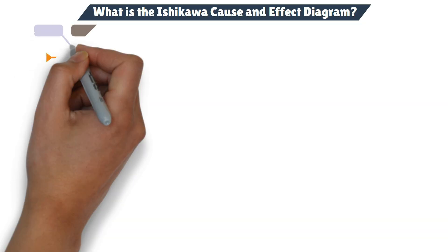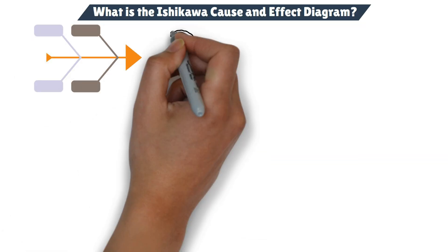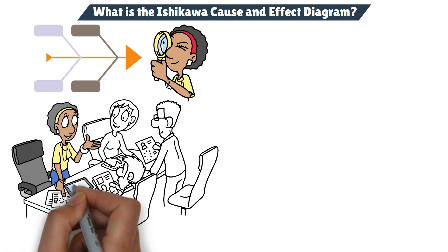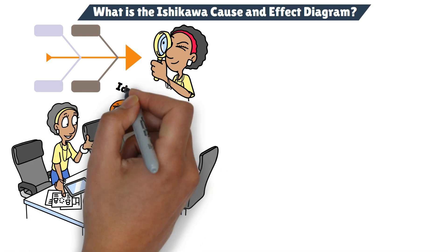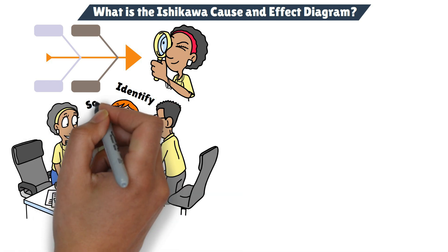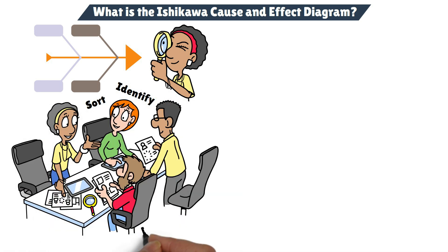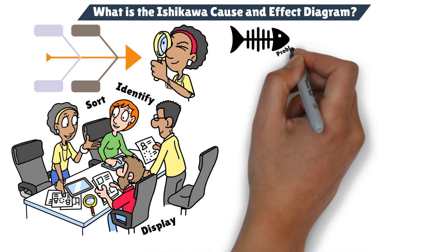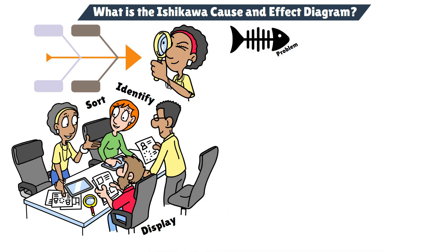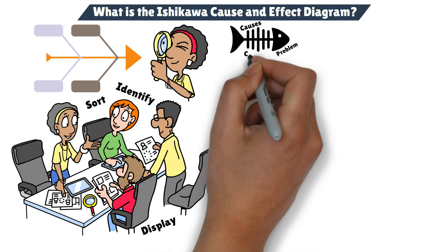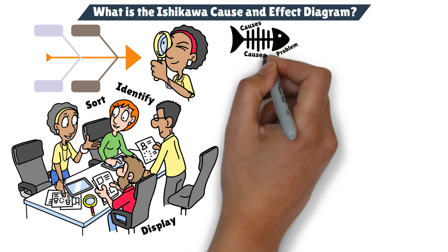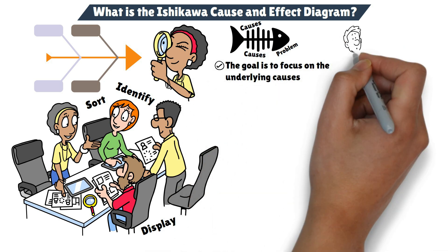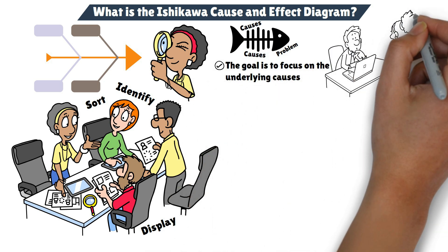The cause and effect diagram is a visual tool used for root cause analysis. It's designed to help project teams systematically identify, sort, and display possible causes of a problem or effect. Imagine a fish's skeleton — the problem is placed at the head, and the possible causes are laid out as branches along the spine. The goal is to focus on the underlying causes rather than just dealing with the symptoms of an issue.